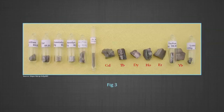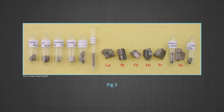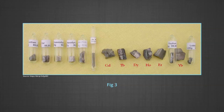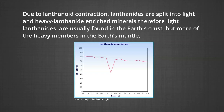Because lanthanum closely resembles the lanthanides, it is usually included in discussions of the lanthanides, for which the general symbol Ln is often used. Similarly, a discussion of the actinides includes actinium besides the 14 elements constituting the series. The lanthanides resemble one another more closely than do the members of the ordinary transition elements in any series. They have only one stable oxidation state, and their chemistry provides an excellent opportunity to examine the effect of small changes in size and nuclear charge. Due to lanthanoid contraction, the lanthanides are split into light and heavy lanthanide-enriched minerals.